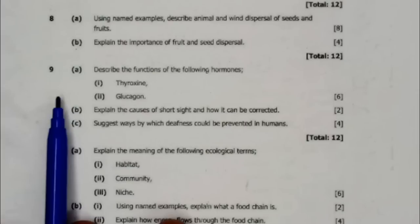Question number 9A: Describe the functions of the following hormones. Number 1: thyroxine. Number 2: glucagon. B: Explain the causes of short-sight and how it can be corrected. Part C: Suggest ways by which deafness can be prevented in humans.